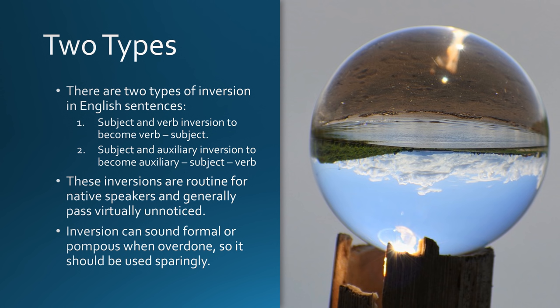There are two types of inversion in English sentences. First, subject and verb inversion, to become verb-subject. Second, subject and auxiliary inversion, to become auxiliary-subject-verb. These inversions are routine for native speakers and generally pass virtually unnoticed. Inversion can sound formal or pompous when overdone, so it should be used sparingly.